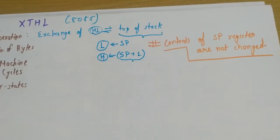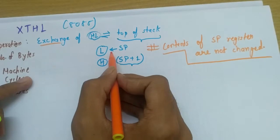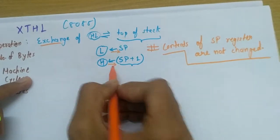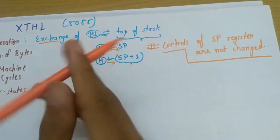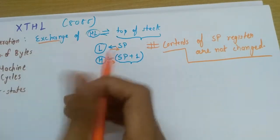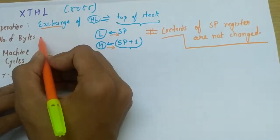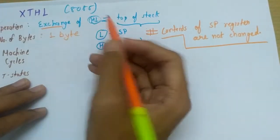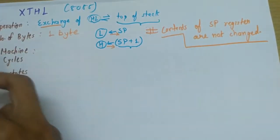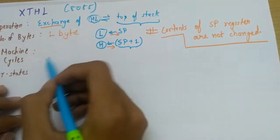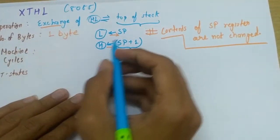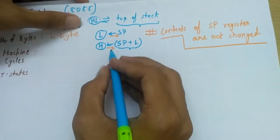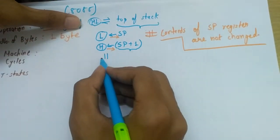Just the data at the pointer's address changes, not the pointer itself. As I said, there is an exchange of data, so a reverse process also takes place. First, please note that it is just a one-byte instruction. Number of machine cycles we will be discussing in a minute.